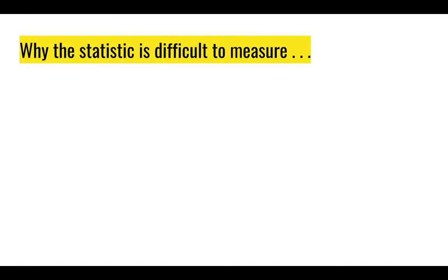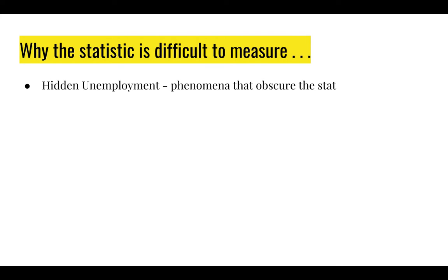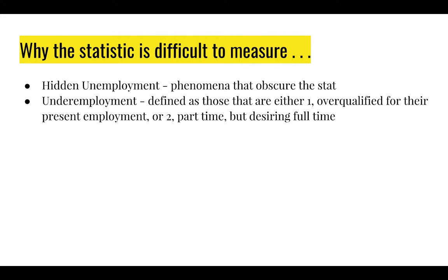Why is unemployment difficult to measure? Why is it sometimes misleading or inaccurate? One main reason is hidden unemployment — phenomena or activity that obscures the statistic, unemployment that exists but is hidden from the figures. One form of hidden unemployment is underemployment: either being overqualified for your present job — for example, an engineer working as a janitor, or a doctor working as a nurse — or being a part-time employee who really wants to work full-time. Both of those would make the unemployment statistic a little misleading.